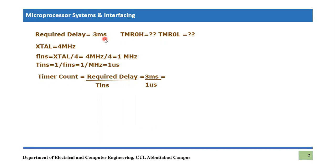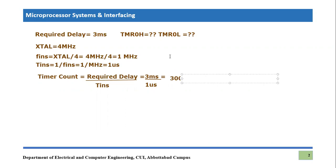The required delay is 3 milliseconds and the time of one instruction is 1 microsecond. So 3 milliseconds divided by 1 microsecond becomes equal to 3000. We want the timer to count up to 3000 times, and Timer 0 is basically a 16-bit counter.